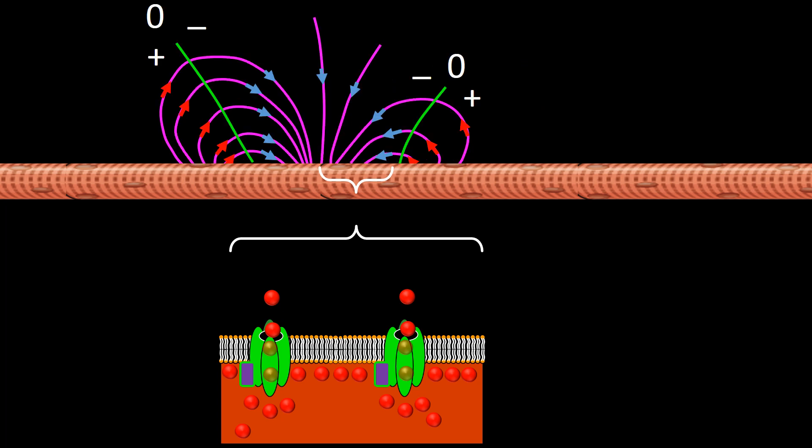Now comes the third element of the quadrupole: the ionic current of the trailing dipole. During it, sodium channels are in the same state as before and sodium ions are transiting through the channels.